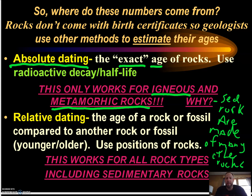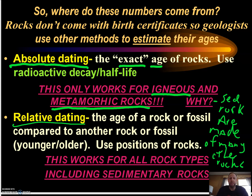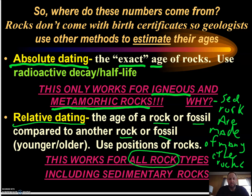The other kind of dating we do is relative dating. This is more like how you would look at me and say I'm old and I would look at you and say you're young, but we have not given any specific ages. We compare rock types and fossils to other rock types and fossils in different areas and we can determine if something is older or younger. This works with all rock types, including sedimentary rocks.